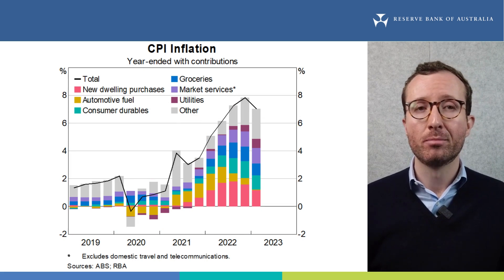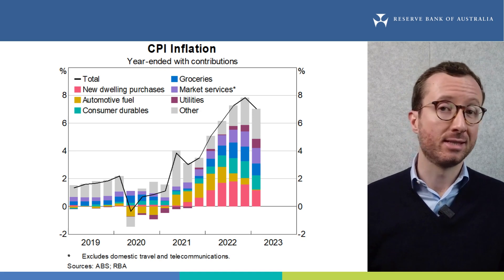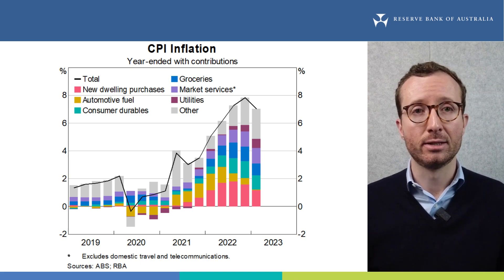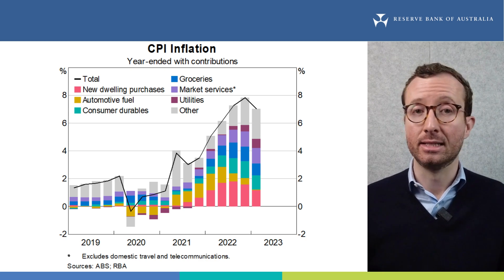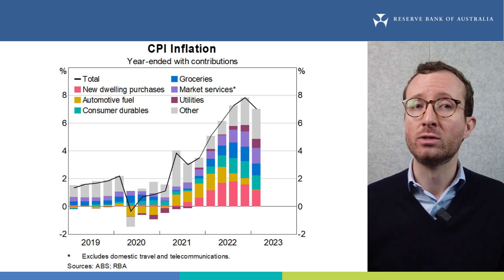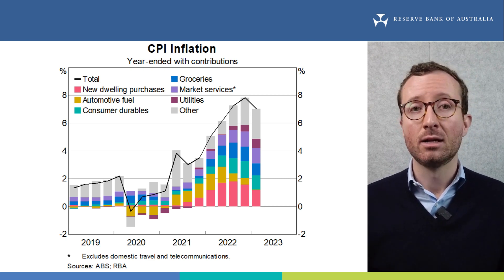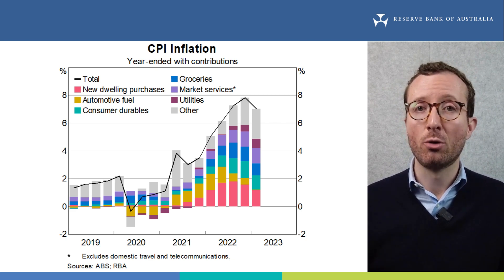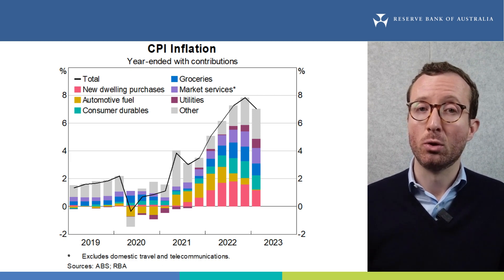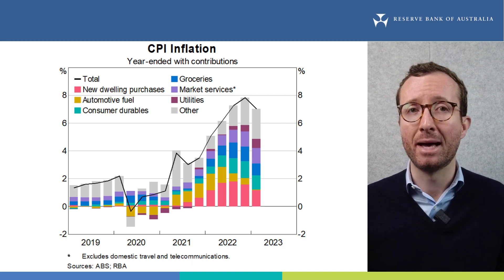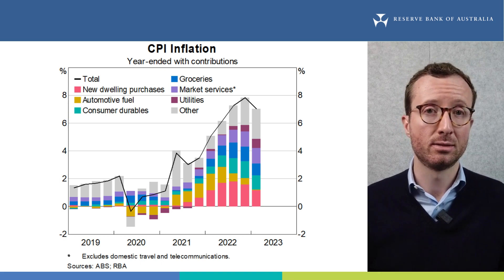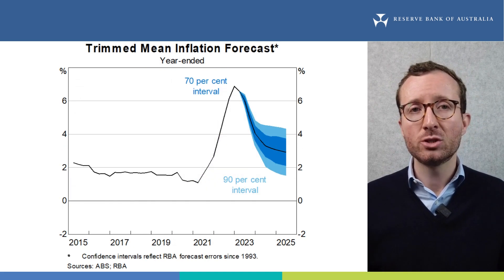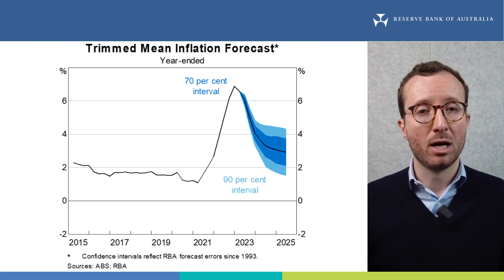Inflation in Australia remains very high and broadly based across a wide range of items, but has passed its peak. This can be seen in this chart, which shows that headline inflation declined to 7% in year-ended terms in the March quarter, after reaching nearly 8% in December. This decline was driven by slowing goods price inflation, consistent with trends in other advanced economies discussed earlier. In particular, the easing in global upstream cost pressures contributed to slower inflation for new dwellings, groceries and many consumer-durable items. But input cost pressures and strong demand continued to contribute to strong price increases for many services. CPI rent inflation has been picking up, consistent with tight rental markets. Measures of underlying inflation also eased in the March quarter, but remain high.